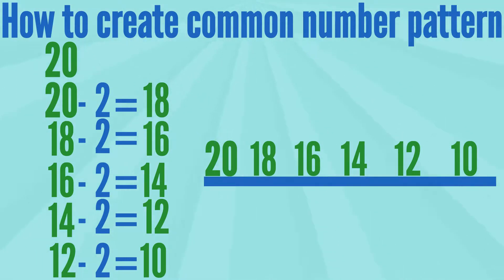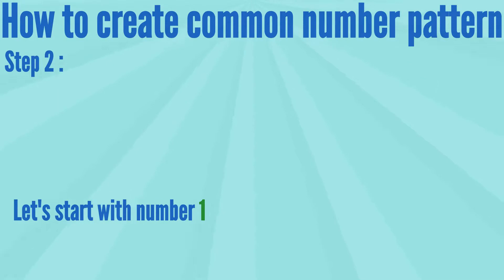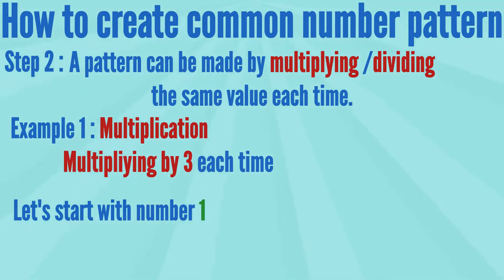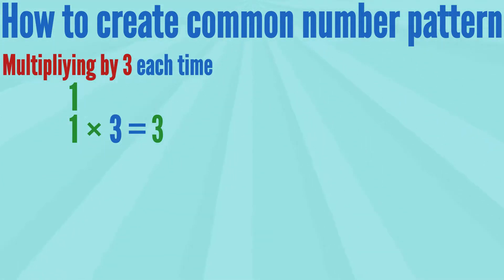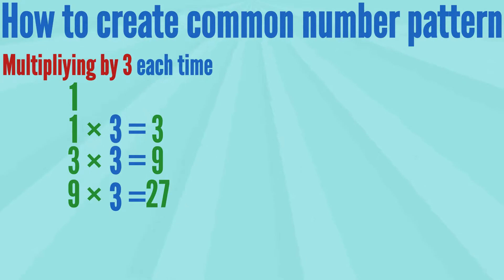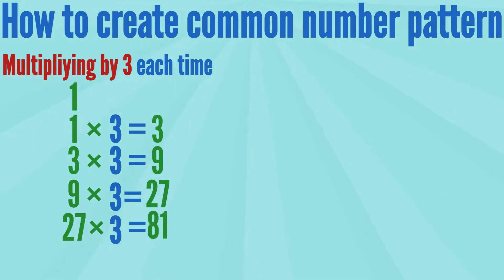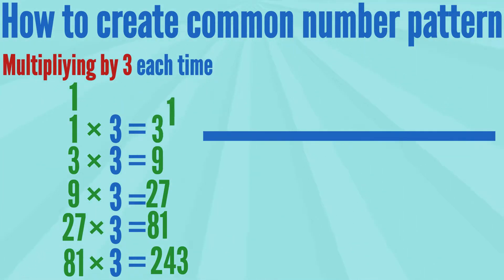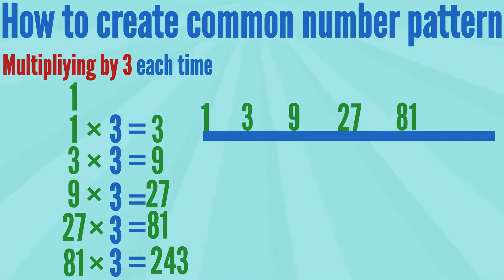Our new pattern is 20, 18, 16, 14, 12, and 10. Step 2: A pattern can also be made by multiplying or dividing the same value each time. Example 1 — Multiplication: Let's create a pattern multiplying by 3 each time, starting with number 1. 1 times 3 is 3, 3 times 3 is 9, 9 times 3 is 27, 27 times 3 is 81. Our new pattern is 1, 3, 9, 27, 81, and 243.